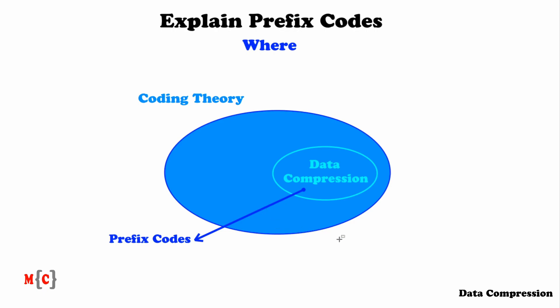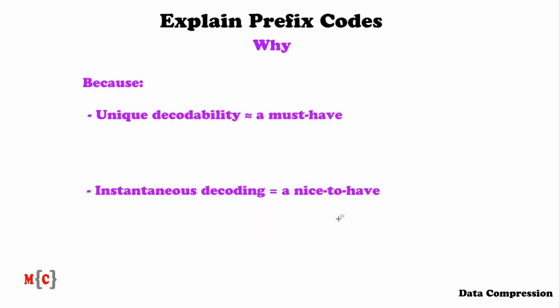Let's now move on to the next question: why are prefix codes so important? That's because of two reasons. First of all, because prefix codes guarantee unique decodability. Besides, they guarantee instantaneous decoding. Let's look at each of these guarantees.